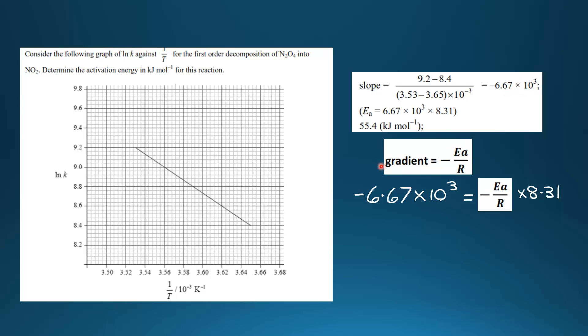From the previous slide, we said that the gradient of the line is equal to -Eₐ/R, where R is the gas constant. We can put in the gradient of the line: -6.67 × 10³ = -Eₐ/R.